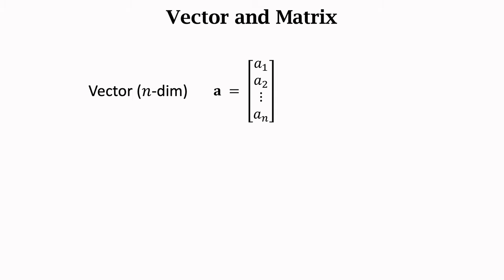Let's first study the representations of vectors and matrices. Vectors are represented by lowercase boldface type. In computer science, vectors are typically column vectors. Small a is an n-dimensional column vector. It contains n elements, denoted by a1, a2, to an. For example, a2 is the second element.